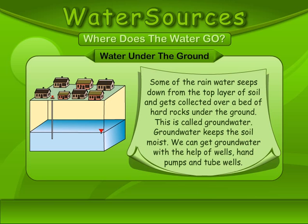Water Under the Ground. Some of the rainwater seeps down from the top layer of soil and gets collected over a bed of hard rocks under the ground. This is called groundwater. Groundwater keeps the soil moist. We can get groundwater with the help of wells, pumps, and tube wells.